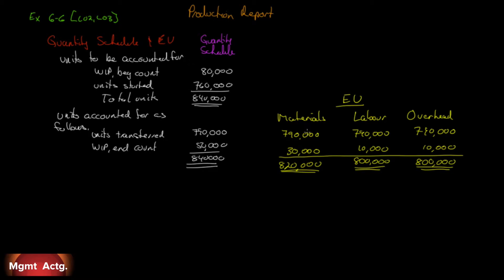That's the end of part one. When we do a production report there are three parts. Part one is the quantity schedule and equivalent units — here we're only concerned with units. Part two is the cost per equivalent unit. In cost per equivalent unit, just as we had units to be accounted for and units accounted for as follows, here we have costs to be accounted for.